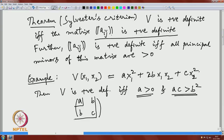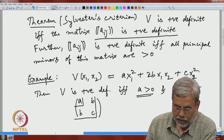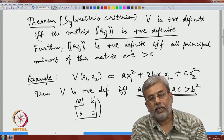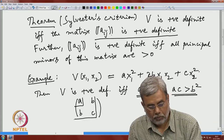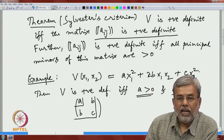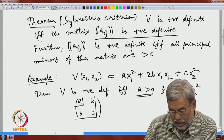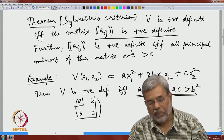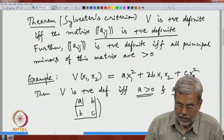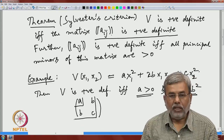In practice, one chooses a positive quadratic function using Sylvester's criterion, then applies it to the given system of differential equations to check whether the second condition is satisfied for stability or instability. This allows us to decide whether the equilibrium point — taken here as the origin — is stable or unstable. Let me explain through some examples.